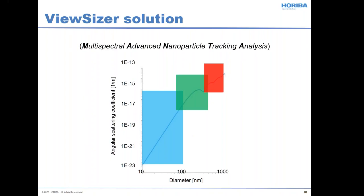With the multi-laser approach, we have a red stream with scattering from a weak excitation and blue with scattering from a strong excitation, and then we knit the whole thing back together after we analyze the particles.